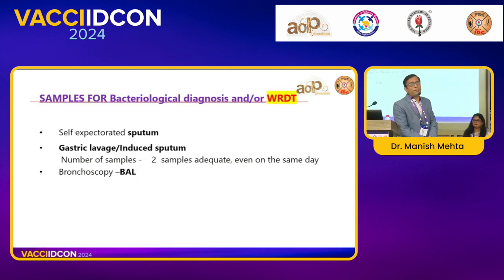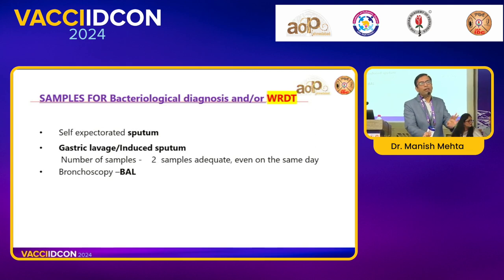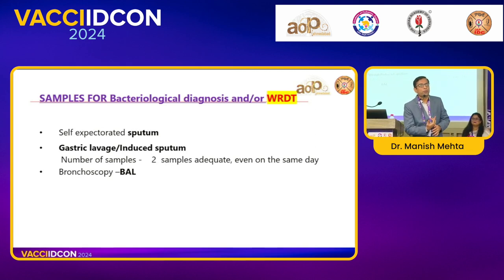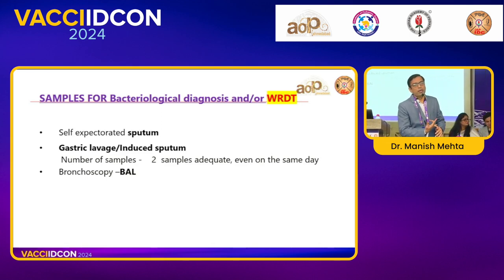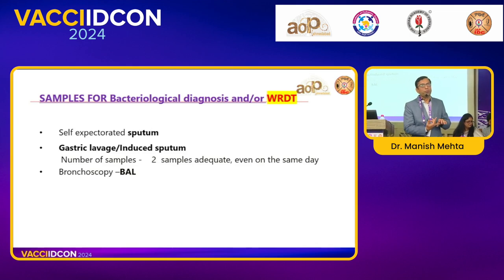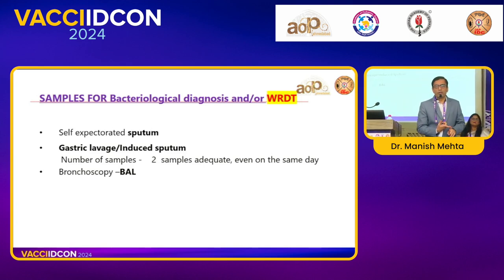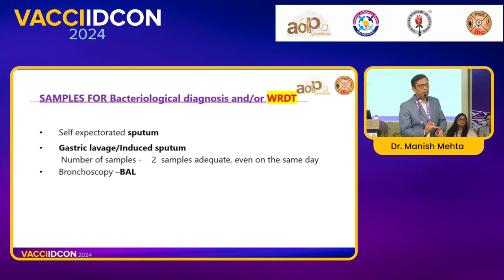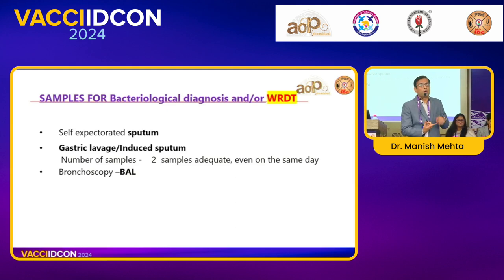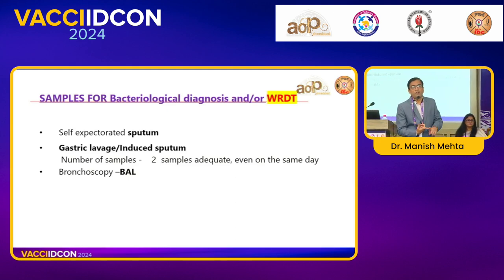What samples can be sent for CBNAAT? Everything except blood: sputum is most common. If you can't get sputum, collect by BAL or induced sputum. When sending BAL or induced sputum, you must perform all three tests: smear, CBNAAT, and culture. Smear has a very low positivity rate but enables early diagnosis; other bacteria can also be identified. The problem with smear is that non-tuberculous mycobacteria will also be AFB-positive, and it gives no sensitivity pattern — so it is only a screening method, not a confirmation test.